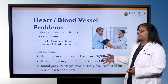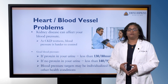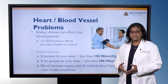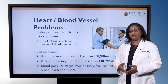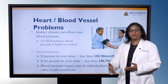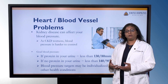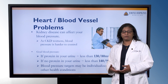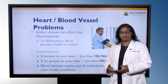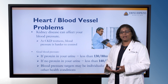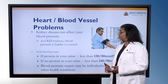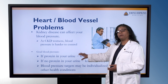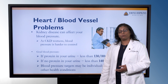Kidney disease can affect blood pressure. The second leading cause of kidney disease is high blood pressure. Even if you don't have high blood pressure before kidney disease, about 90% of individuals with kidney issues will go on to develop high blood pressure. And as the kidney disease worsens, the blood pressure is harder to control.